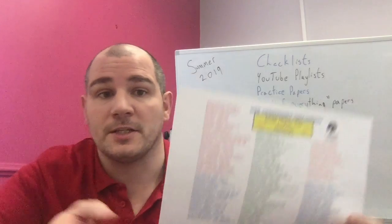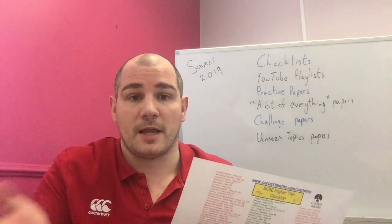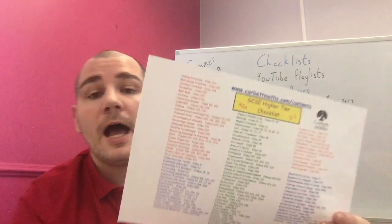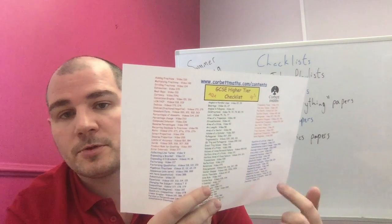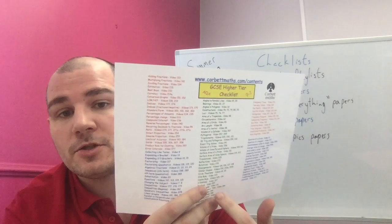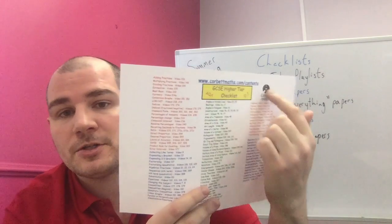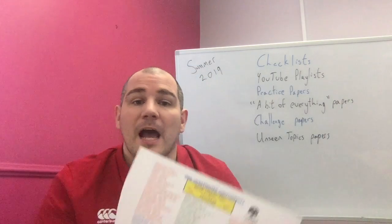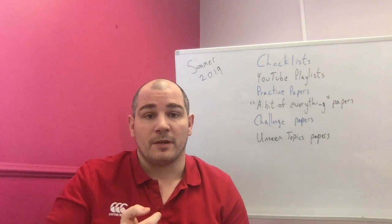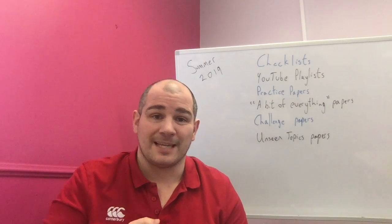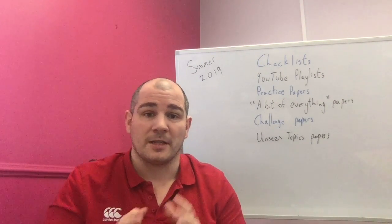So first of all we've got the checklists. The checklists are a list of all the topics which you can be tested on for each of the different papers — Higher, Foundation, AQA, Edexcel and so on. We've got in red a list of all the number topics, in blue the algebra topics, in green the geometry topics, and in orange the statistics topics. Beside each of the topics you've got a video number so if you go into Corbett Maths that is the video tutorial and the practice questions on the textbook exercise on each of those topics.